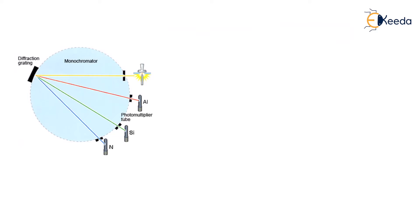Here they are showing a monochromator with diffraction grating. First, a discharge plasma is created; that discharge plasma emits a spectrum; that spectrum is passed through a diffraction grating; after the diffraction grating, the emission passes through the photomultiplier tubes, through which we determine which element is present or absent, and how much quantity of each element is present.